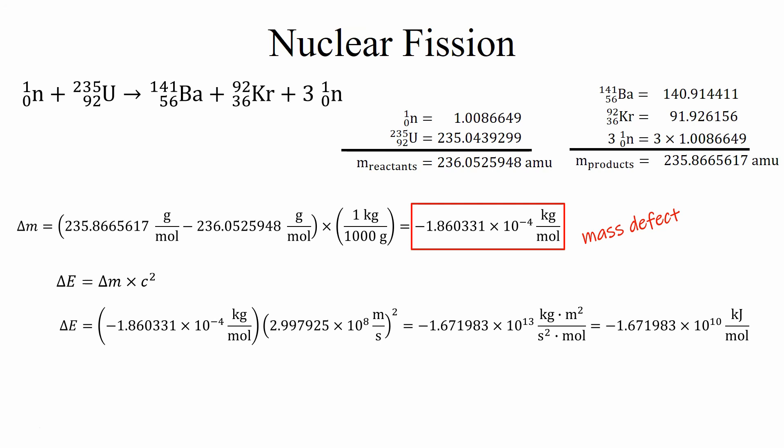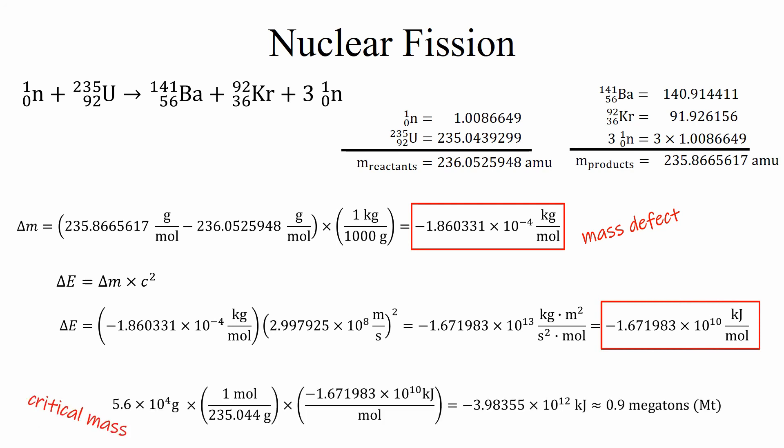Now at a critical mass of 56 kilograms we actually produce about 4 times 10 to the 12 kilojoules or nearly a megaton of energy. Now it should be noted that the original Little Boy device which contains 64 kilograms of uranium-235 actually produced only 15 kilotons of energy. This low yield is due to the inefficient and incomplete fission of the uranium.